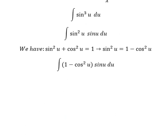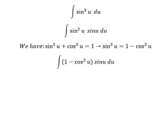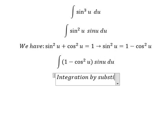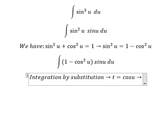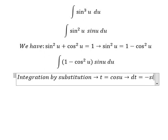Next we need to use integration by substitution. So I will put t equals to cos u, so we do first derivative for both sides. We have negative sin u du.